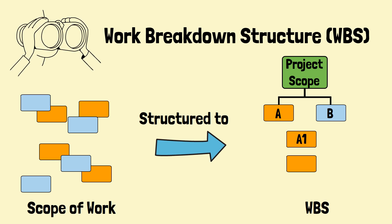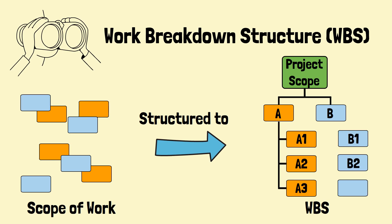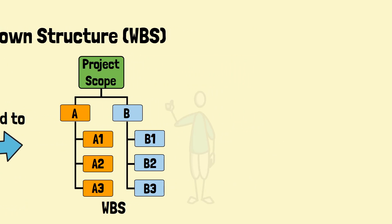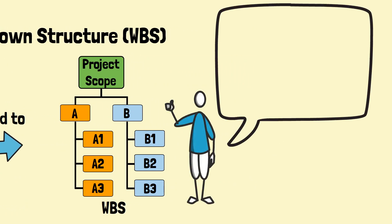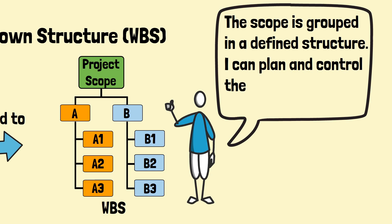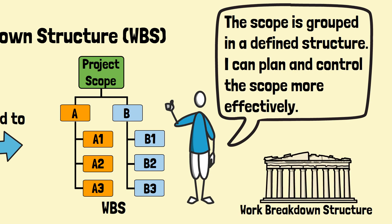Each descending level represents a more detailed definition of the project work. The goal of the WBS is to present project work in a hierarchical, manageable, and definable format, serving as the foundation for project planning and accountability.